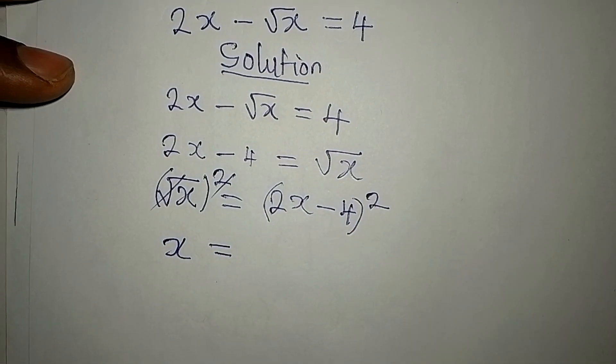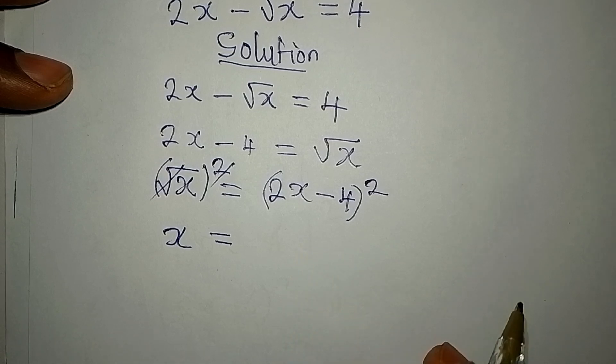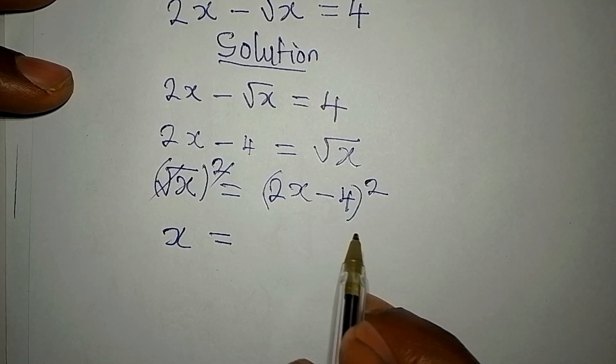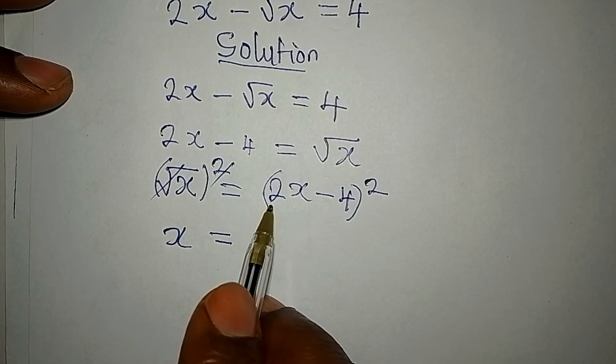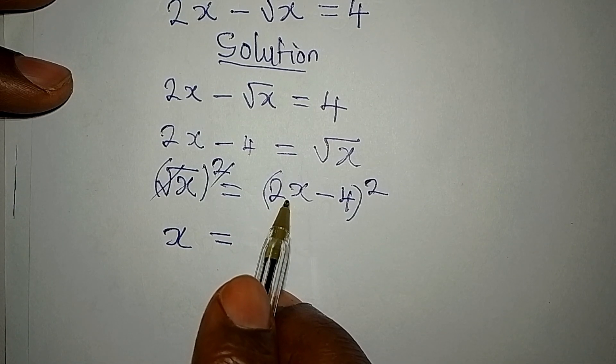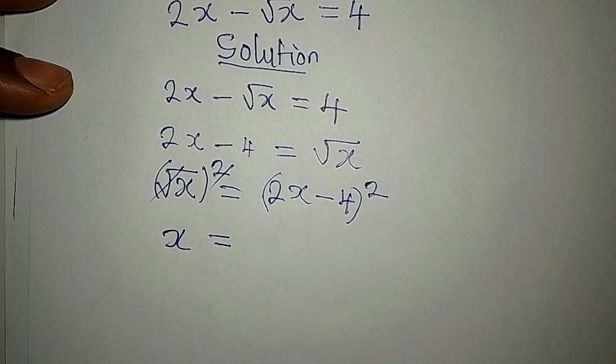One of my students, if he has anything like this to square, he will say 2x squared minus 4 squared. That's how he does it, but that is not correct.